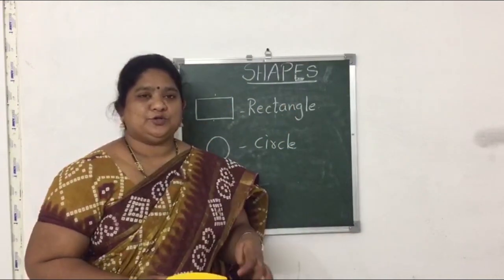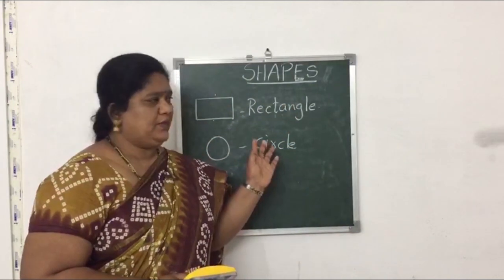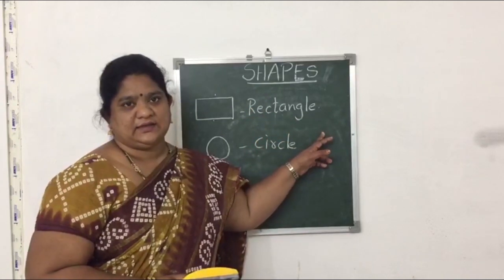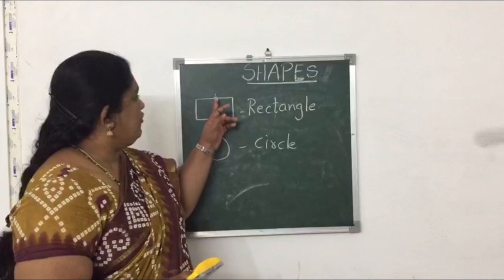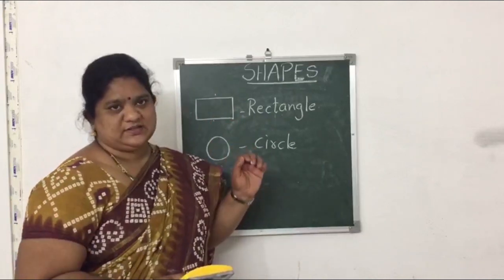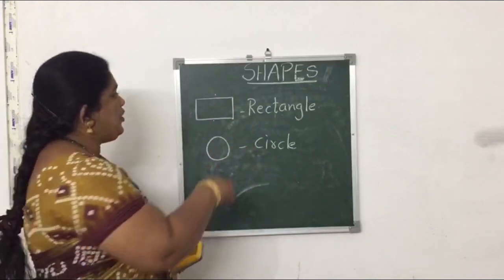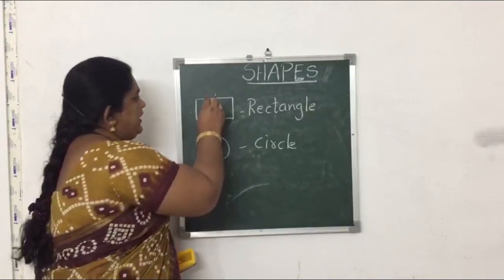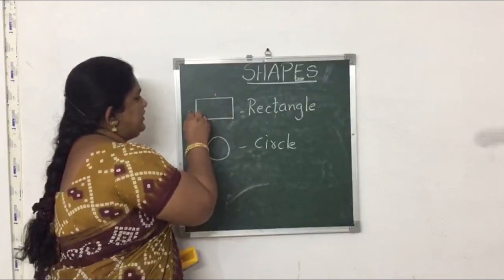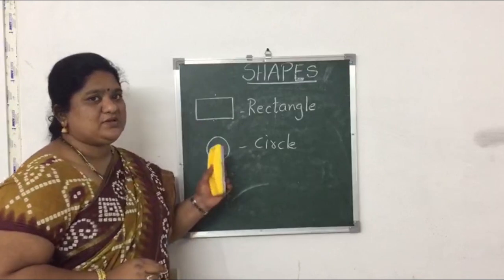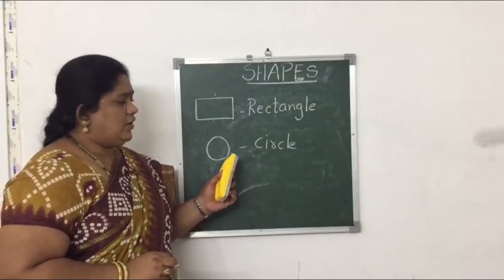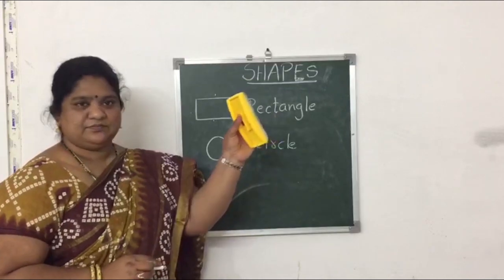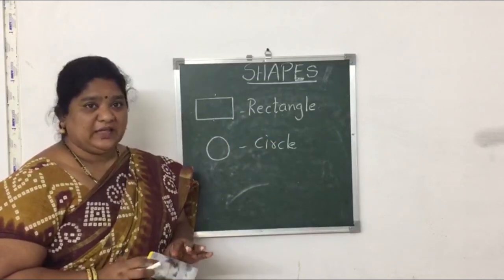Once I am going to recall them. Rectangle. R-E-C-T-A-N-G-L-E. Rectangle has 4 sides and 4 corners, but the opposite sides are equal. 1 and 2 are equal and 3 and 4 are equal. So opposite sides are equal. Examples of rectangle: the duster, cell phone, TV.